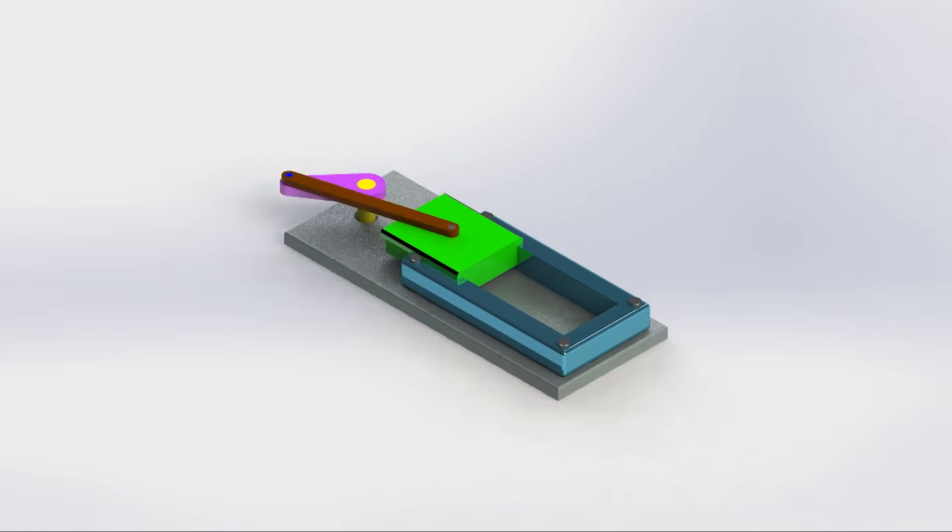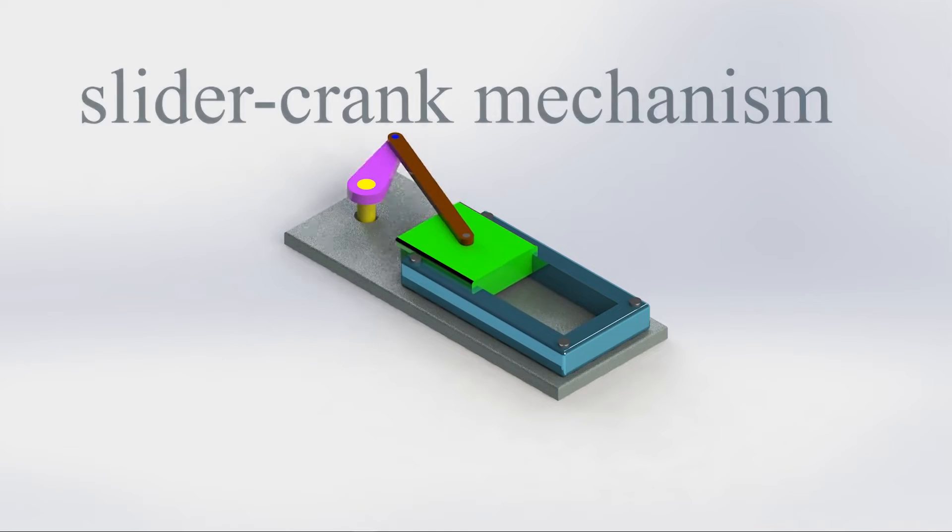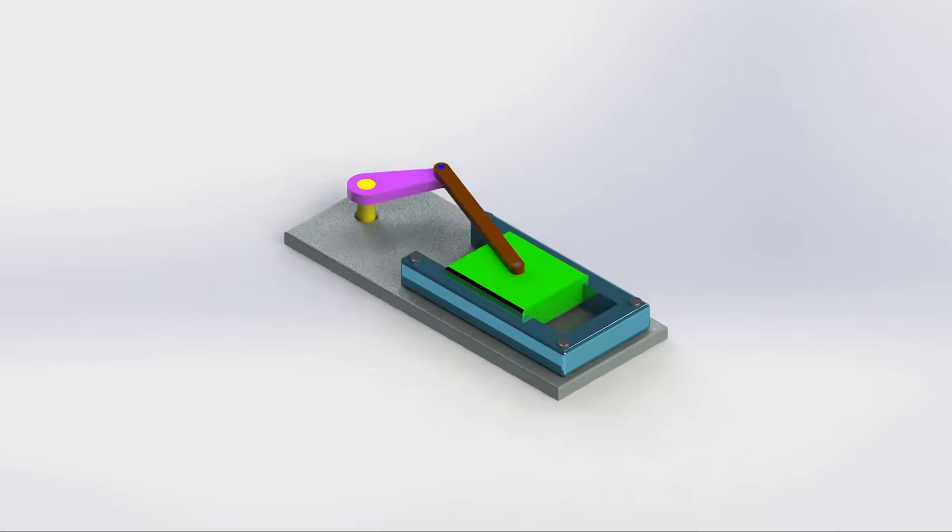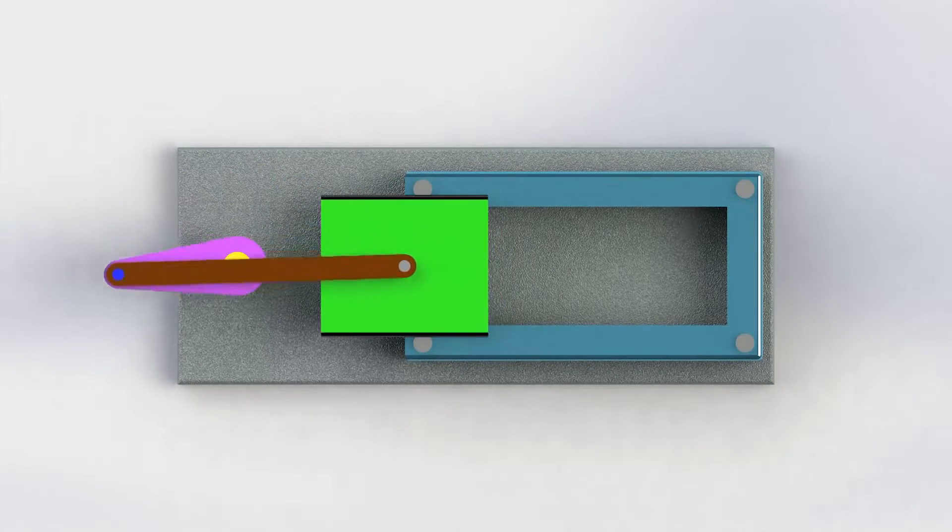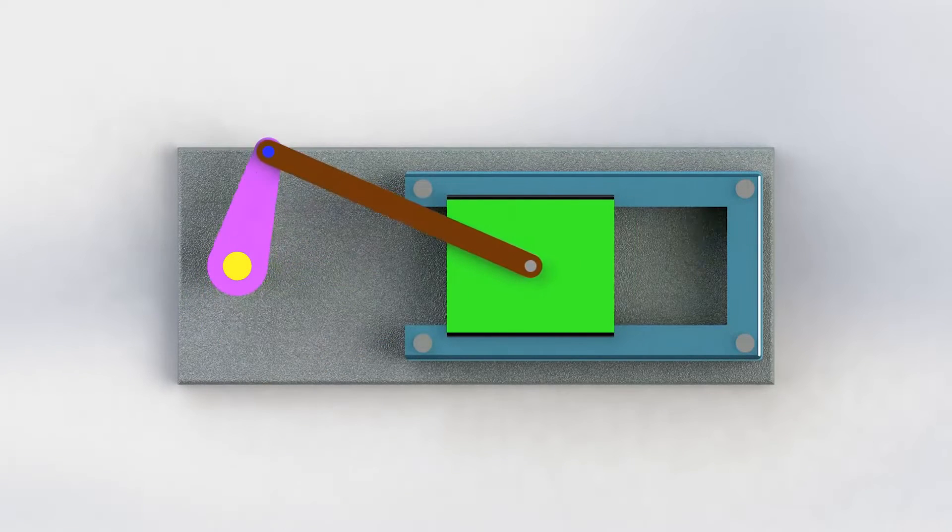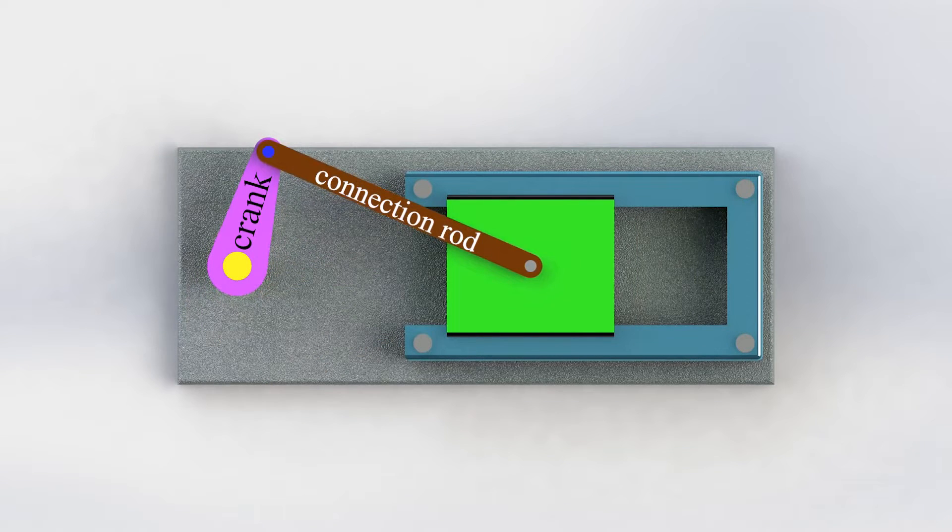Hello everyone, welcome to Engineers House channel. Today's video is about the slider crank mechanism and its applications. This mechanism essentially consists of three components: a crank, the connection rod, and a slider. However, it is mainly known as a four bar linkage.